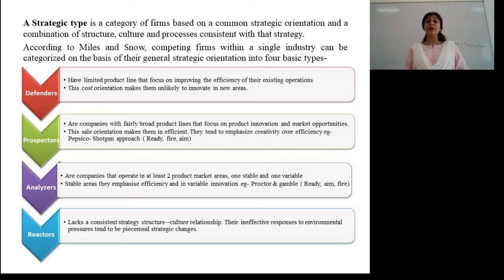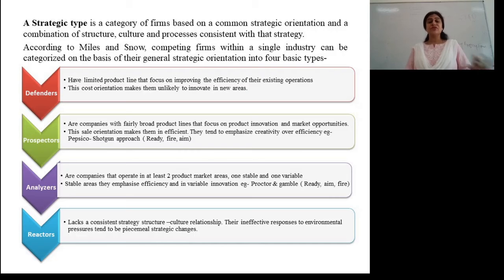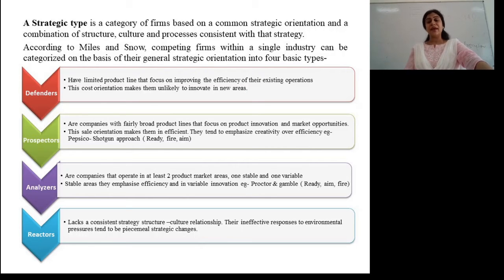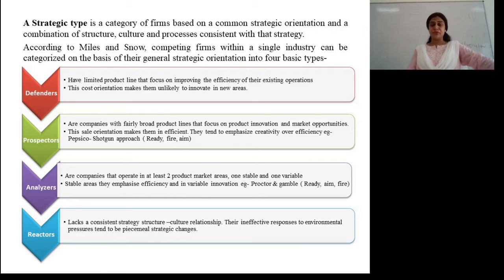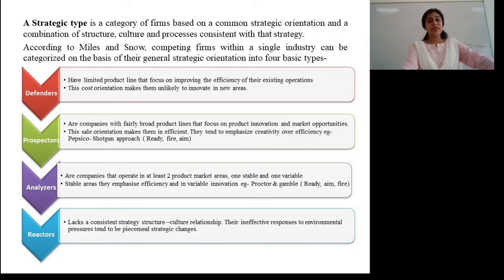Third is analyzers. These are companies that operate in at least two product markets — one stable and one unstable. In stable areas, they emphasize efficiency of work, manufacturing systems, and policies. In variable markets they emphasize innovation — like Procter and Gamble, whose approach is ready, aim, and fire. Fourth is reactors. They lack a consistent strategy-structure-culture relationship. In effect, their general responses to environmental pressure tend toward piecemeal strategy changes. They basically react when things happen, give very ineffective responses to environmental threats and pressures, and are doing just the bare minimum in an industry.